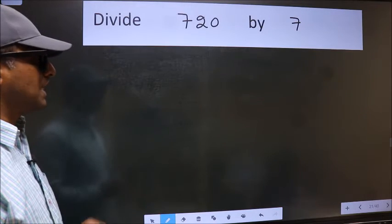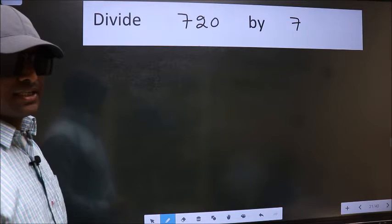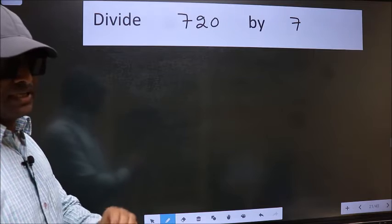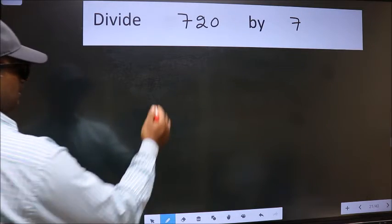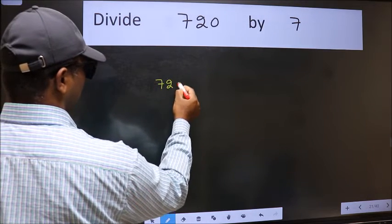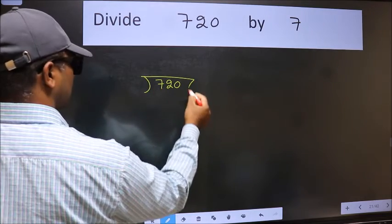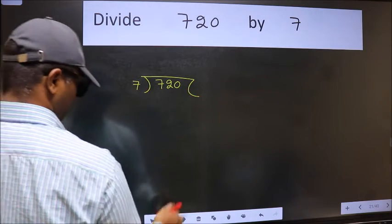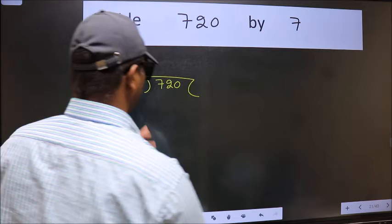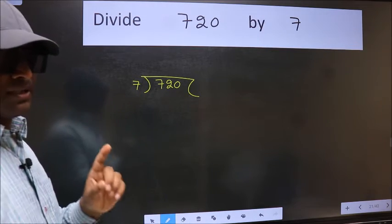Divide 720 by 7. To do this division, we should frame it in this way: 720 here and 7 here. This is your step 1.